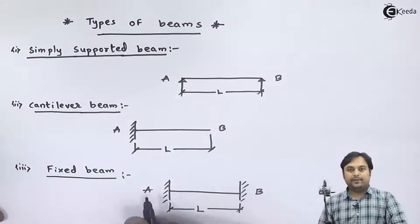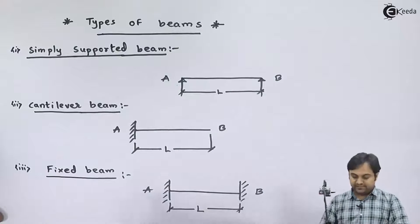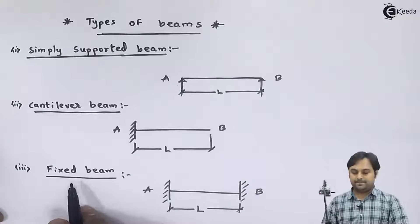If we have a beam which is fixed at both ends, that kind of beam is called a fixed beam.